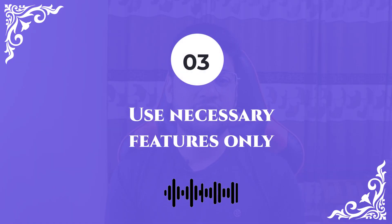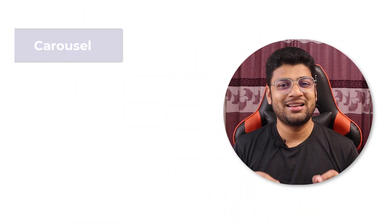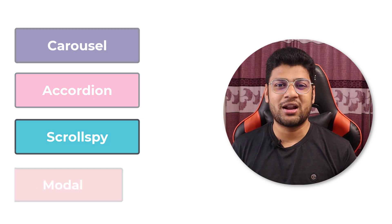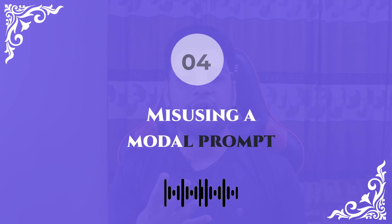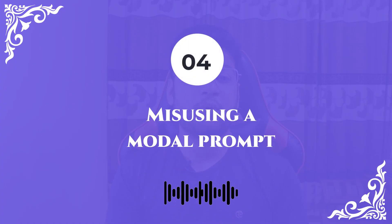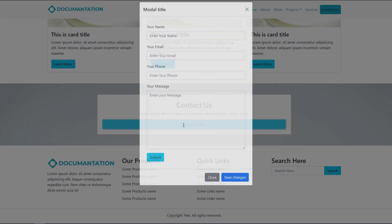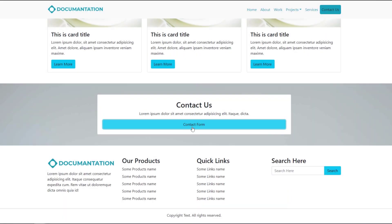Number three: use necessary features only. Bootstrap offers many features such as carousels, accordions, tooltips, and modals. Based on your project needs, you can use whatever Bootstrap offers, but if a feature is not needed on your project you can simply skip it. This will help you minimize errors.